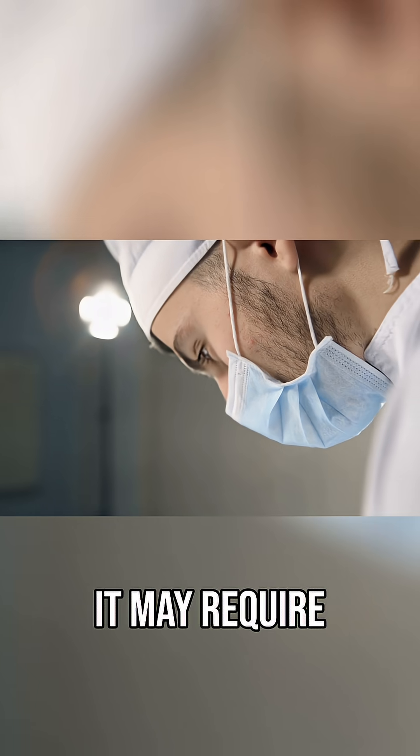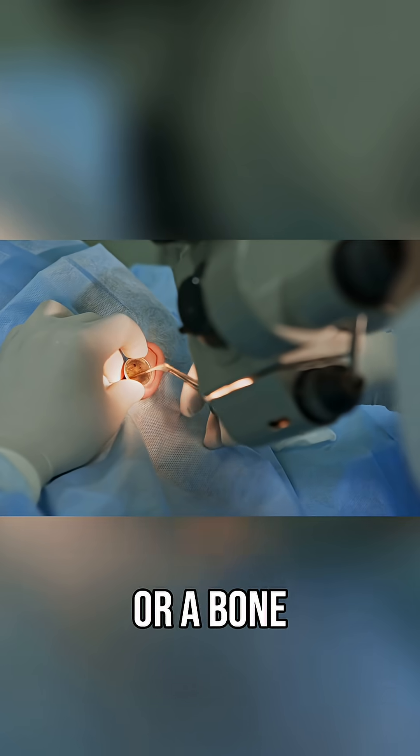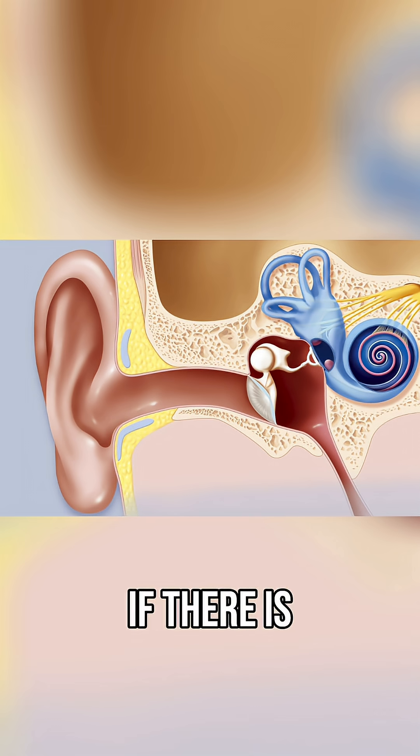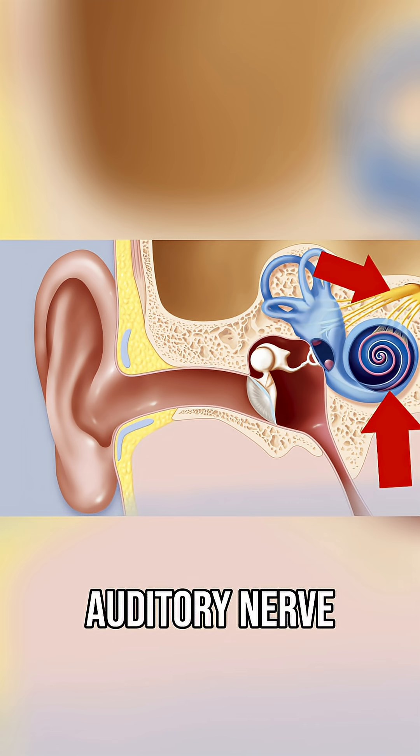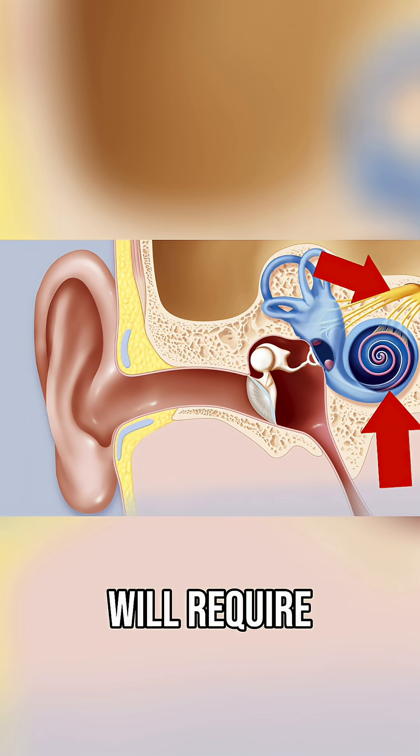To correct for this, it may require surgery, medical intervention, or a bone conduction hearing aid. If there is no gap between the air conduction thresholds and the bone conduction thresholds, the issue is either within your cochlea, which is your hearing organ, or along the auditory nerve up to your brain, and will require either hearing aids or a cochlear implant to treat.